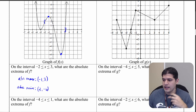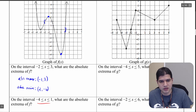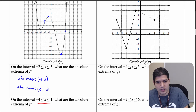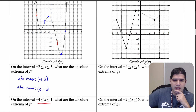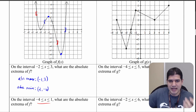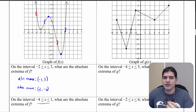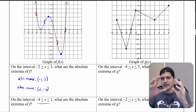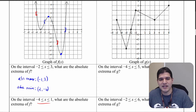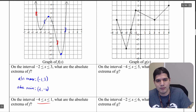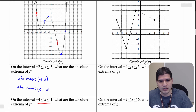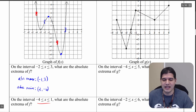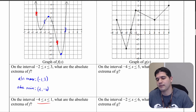Now let's change the interval to negative four to one. I'll mark that off. On that condensed interval, the absolute maximum is at (−4, 4) — notice that is higher than the relative maximum at (−1, 3). And the absolute minimum is at the endpoint (1, −3). So the endpoints turn out to be the absolute maximum and minimum here.